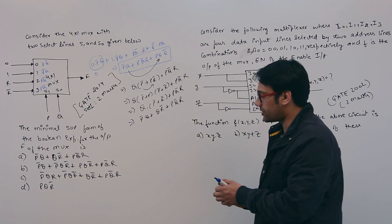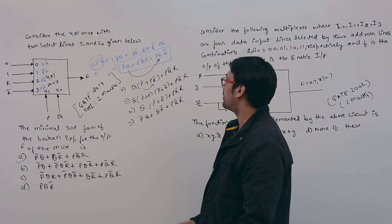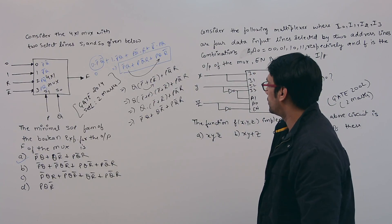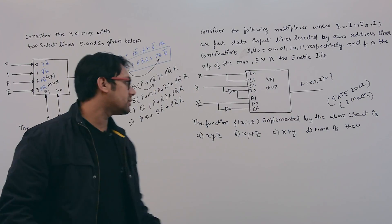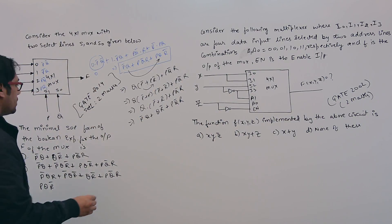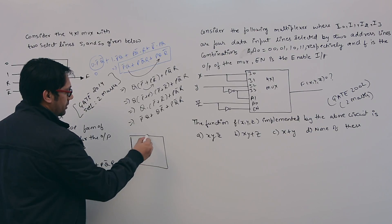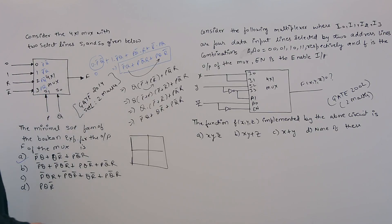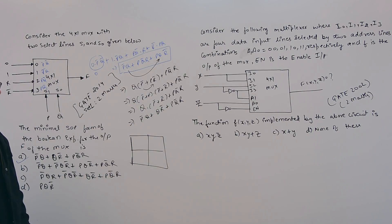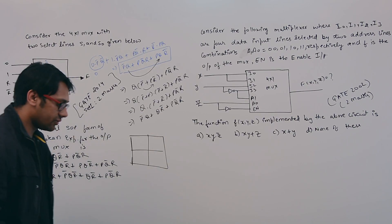Therefore option A is correct. An alternative approach is to make a K-map for this. Since we have three variables, you take a three-variable K-map, implement this function, and get the same equation. We have already covered how to solve K-maps. Now let us consider the second question.